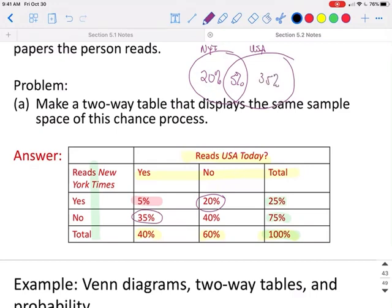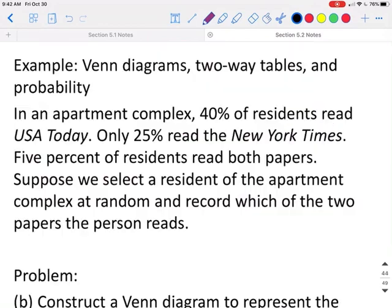Now, inside this box but not in either of the circles, we also need to represent the people that did not read either the New York Times or USA Today, which would be 40% of the population.